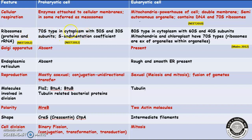Prokaryotic ribosomes are 70S type, present in the cytoplasm, with 50S and 30S subunits — 'S' is the sedimentation coefficient; this was questioned in NEET 2012. In eukaryotic cells, ribosomes are 80S type with 60S and 40S subunits. However, eukaryotic cells have both 70S and 80S ribosomes: 80S is present in the cytoplasm and 70S is present in mitochondria and chloroplasts. 80S ribosomes are present on the rough endoplasmic reticulum as well as free in the cytosol for translation of nuclear mRNA.